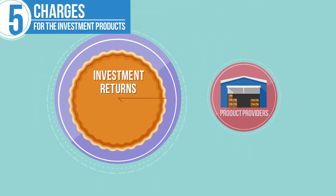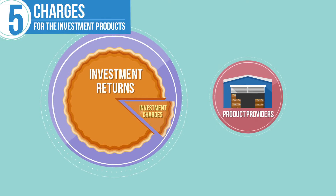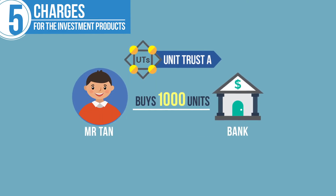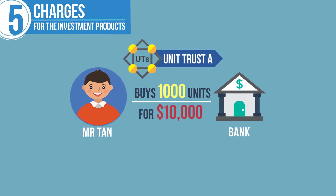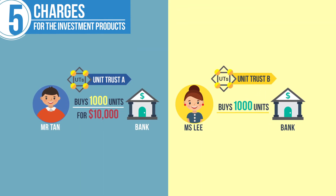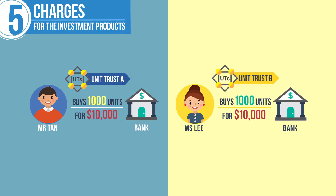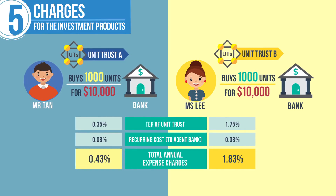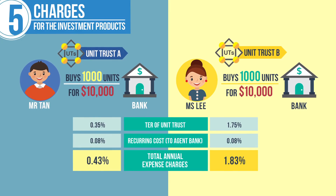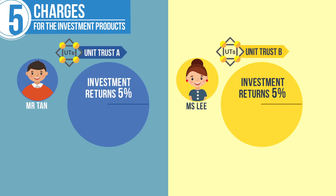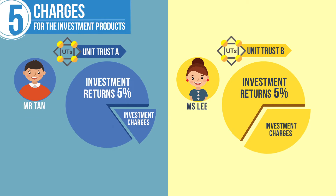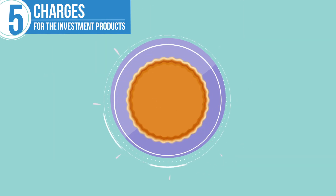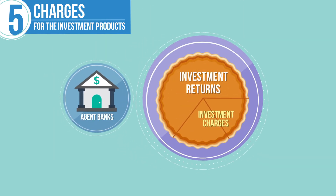You will need to pay fees to product providers when you invest; these are known as investment charges. For example, Mr. Tan buys 1,000 units of Unit Trust A at a cost of $10,000 via a bank. Note that the annual expense charges for Unit Trust B are higher than Unit Trust A. Assuming both unit trusts have an annual return of 5%, Miss Lee's investment returns will be lower due to the higher investment charges. Therefore, it is important to check with the agent banks and product providers on the full range of charges payable before you purchase an investment product.